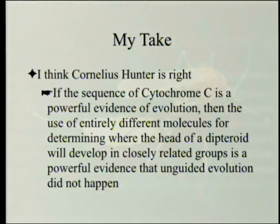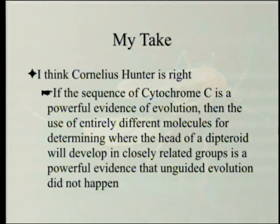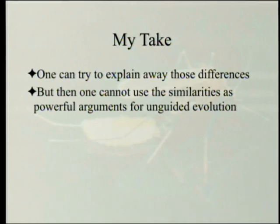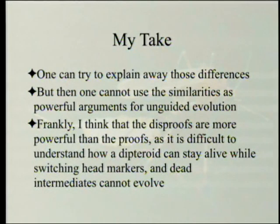I think Cornelius Hunter is right. If the sequence of cytochrome C is powerful evidence of evolution — as it was claimed since back when I was in school — then the use of entirely different molecules for determining where the head of a dipteroid will develop in closely related groups is powerful evidence that unguided evolution did not happen. One can try to explain away those differences, but when you do, you reduce the predictive power of the theory. The disproofs are, in fact, more powerful than the proofs. It's difficult to understand how a dipteroid can stay alive while switching head markers — dead intermediates cannot evolve.